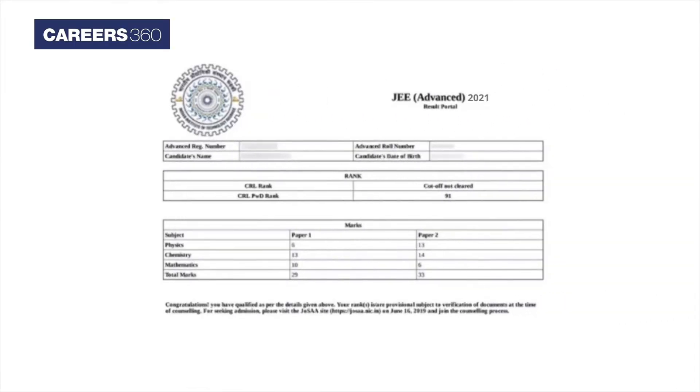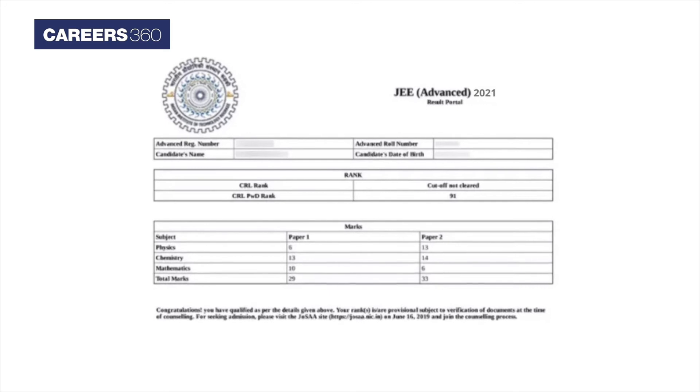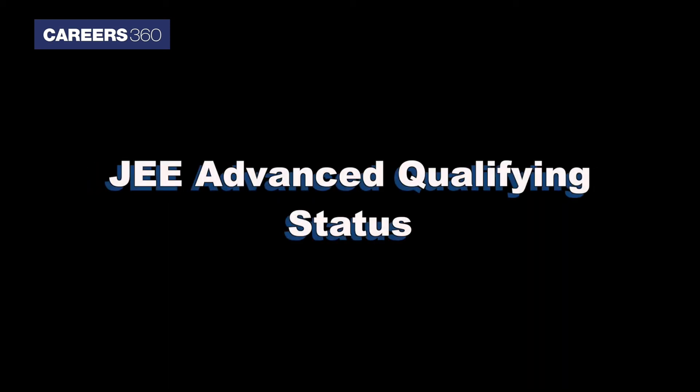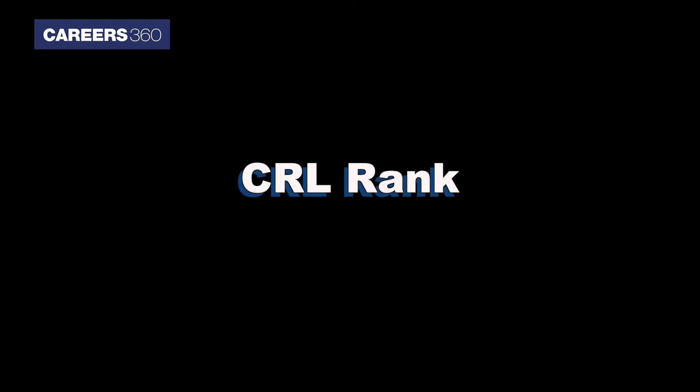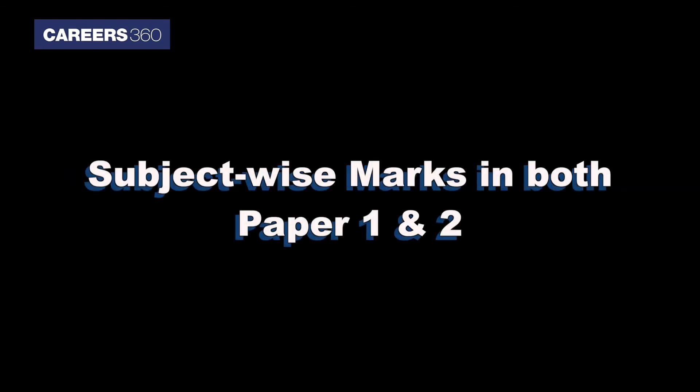After checking the result, applicants can find the following details mentioned in the JEE Advanced Scorecard flashing on your screen: registration number, role number, name of the candidate, date of birth, JEE Advanced qualifying status, CRL rank, category-wise All India rank, subject-wise marks in both Paper 1 and 2, total positive marks, and total marks.